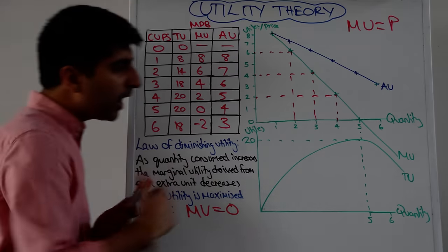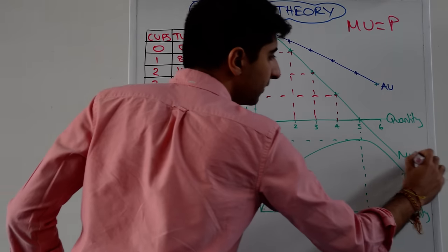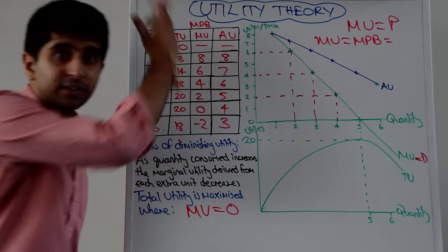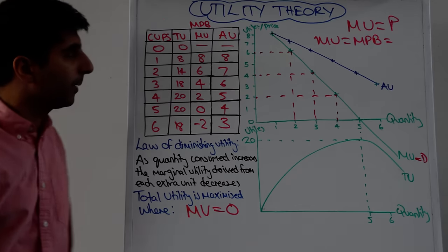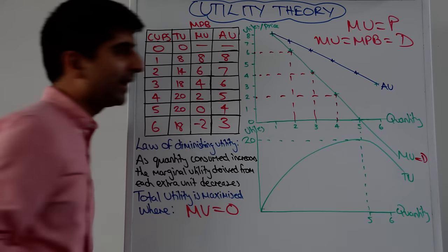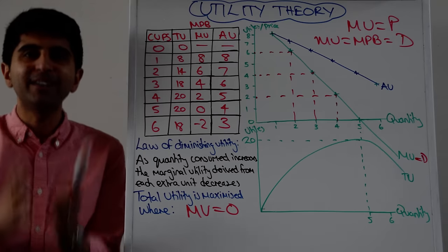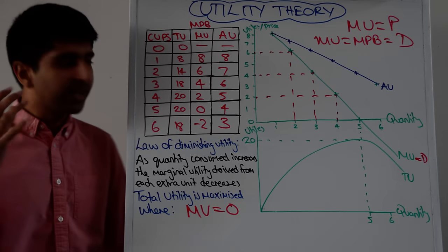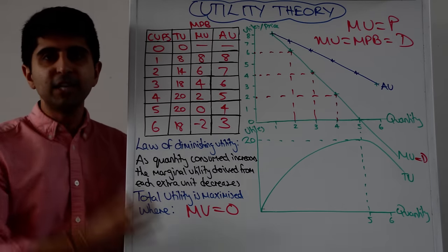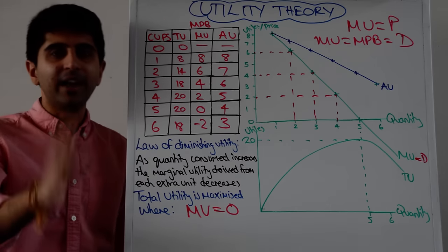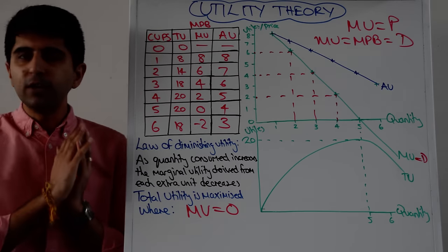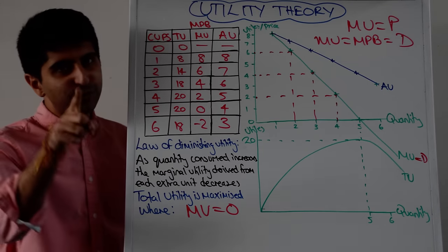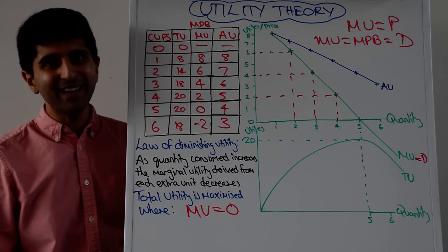Therefore, we can say that the marginal utility curve is the demand curve. Marginal utility is the marginal private benefit — which is why we draw it downward sloping in market failure diagrams — but it's also equal to demand, i.e., it's the demand curve. Now you know in more detail why the demand curve is downward sloping: it comes from the law of diminishing marginal utility. That is the deeper idea behind it and the underpinning of what economics is all about. Thank you so much for watching — hope that all made sense. I'll see you all in the next video.